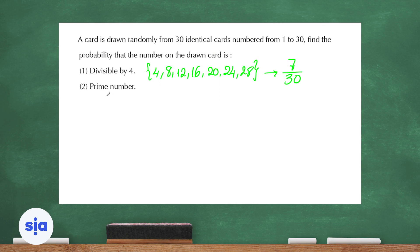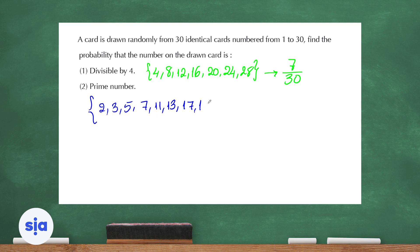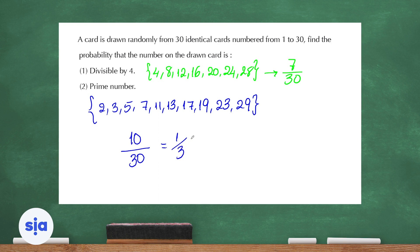The second part asks for the probability of drawing a prime number. Remember, 1 is not a prime number. The prime numbers from 1 to 30 are: 2, 3, 5, 7, 11, 13, 17, 19, 23, and 29 — that's 10 prime numbers. So the probability is 10 out of 30, which simplifies to 1 over 3.